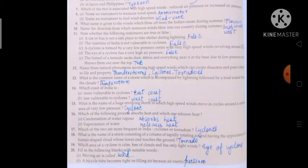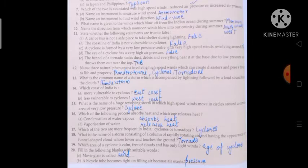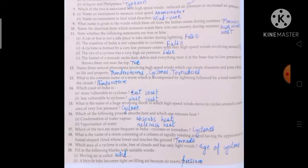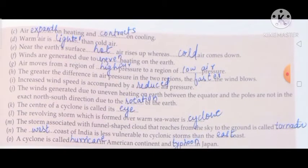A) moving air is called wind. B) a bicycle tube becomes tight on filling air because air exerts pressure. C) air expands on heating and contracts on cooling. D) warm air is lighter than cold air.